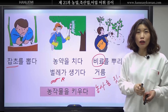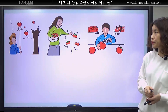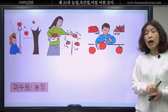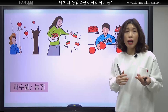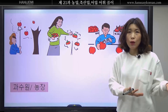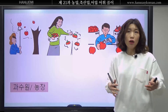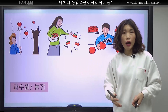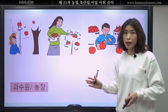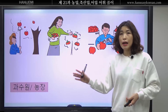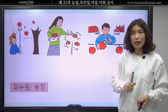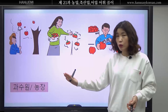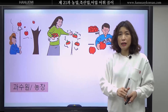이것보다도 사실은 더 일이 많죠. 그 다음 볼게요. 여기가 어디예요? 과수원입니다. 과수원은 과일, 사과, 딸기, 포도 이런 거 키우는 곳이 과수원이에요. 그런데 농장, 사과농장, 포도농장 이렇게 이야기할 수도 있어요. 과일을 키우는 곳, 과수원 그리고 농장입니다.